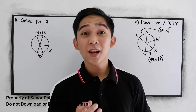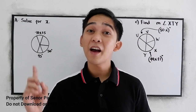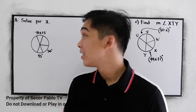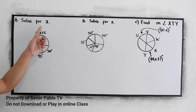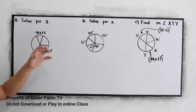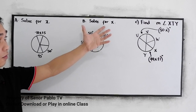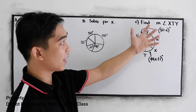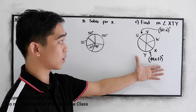To apply the definition of our central angles and arcs, let's have the following exercises. We have A — solve for X — with this illustration and the given. For B, solve for X. And for letter C, this will be the illustration.